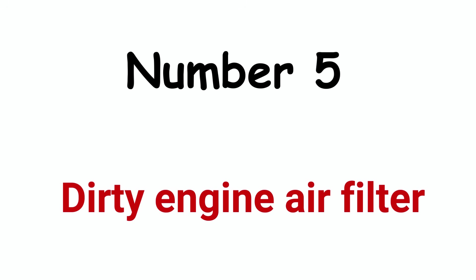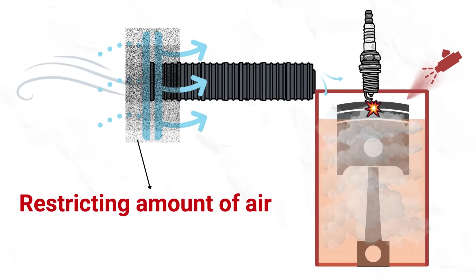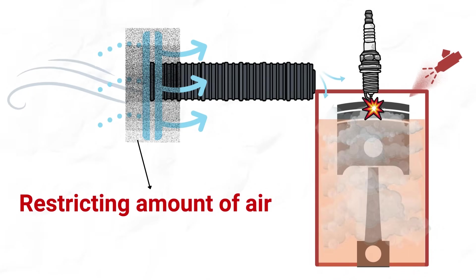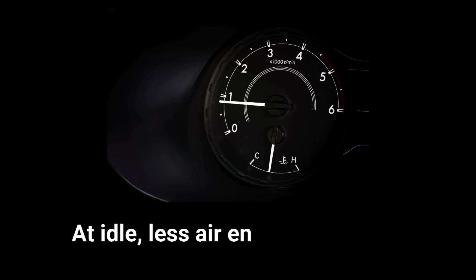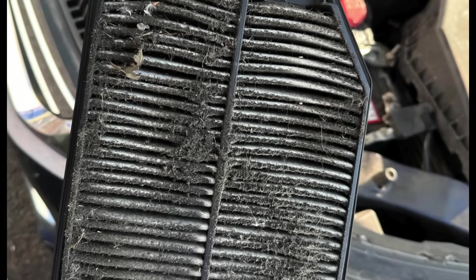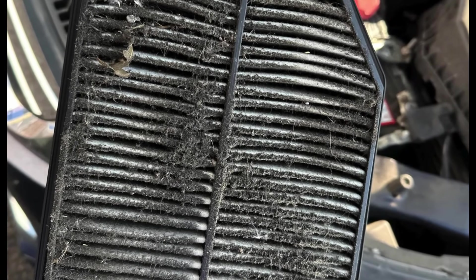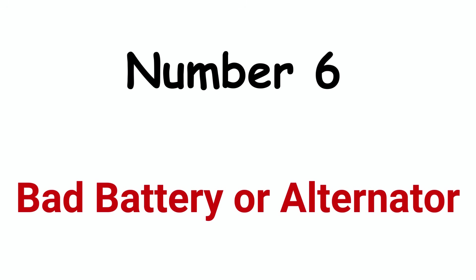Cause #5: Dirty engine air filter. A restricted engine air filter can cause RPM fluctuations by limiting the amount of air entering the engine. At idle, there is already less air entering the engine, so if the air filter is clogged, it will further restrict airflow into the engine.